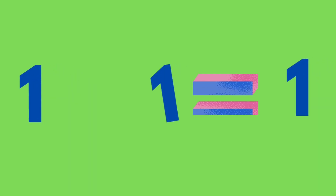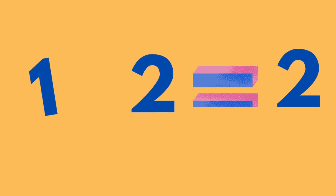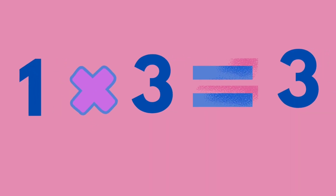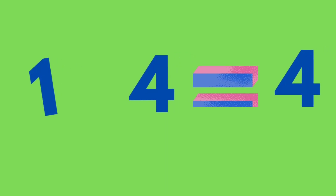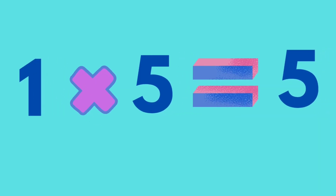Table 1. 1 times 1 is equal to 1. 1 times 2 is equal to 2. 1 times 3 is equal to 3. 1 times 4 is equal to 4. 1 times 5 is equal to 5.